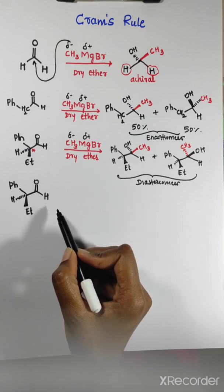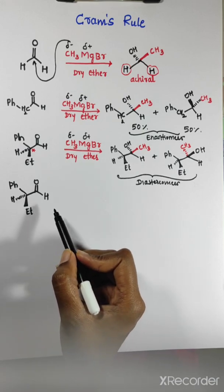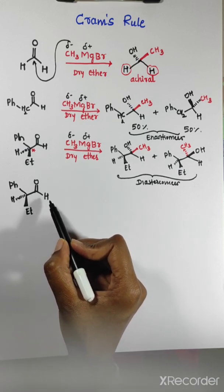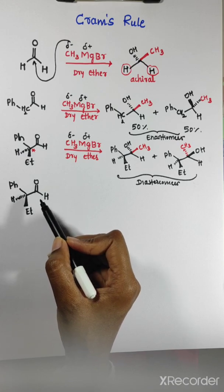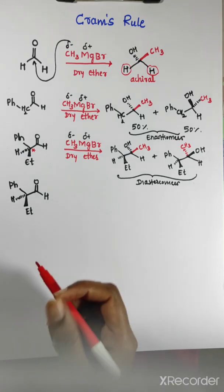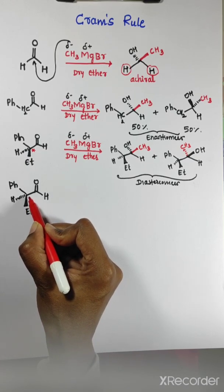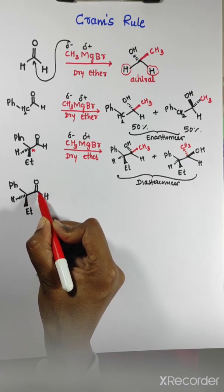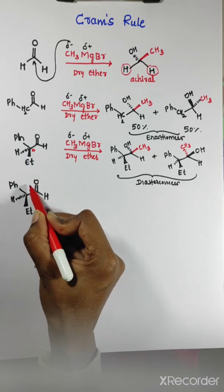What are the conditions for Cram's rule? There are some conditions for Cram's rule. The first condition is: there must be a chiral carbon atom - that is, a chiral center - adjacent to the carbonyl group.